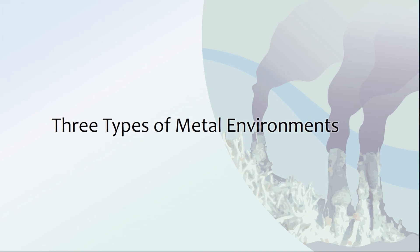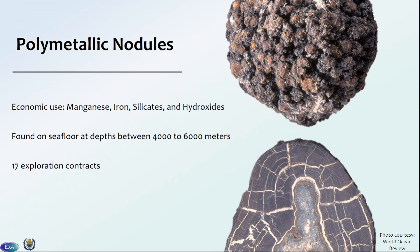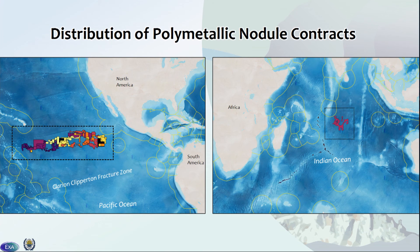There are three unique oceanographic environments that drive the regulations and our geodatabase application design. The first mineral to be contracted and explored was polymetallic nodules. Their economic interest is in their manganese, iron, silicates, and hydroxide makeup. They're found on the seafloor at depths between 4,000 and 6,000 meters. There are currently 17 exploration contracts, and most of these are happening in the Clarion-Clipperton fracture zone in the Pacific Ocean — all those different colors are different contractors. There's also one contract happening in the Indian Ocean.